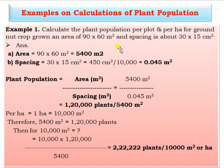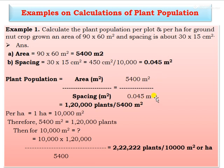Convert 450 cm² to m² by dividing by 10,000, giving 0.045 m². Now apply the formula: area in m² divided by spacing in m². That is 5,400 m² divided by 0.045 m².